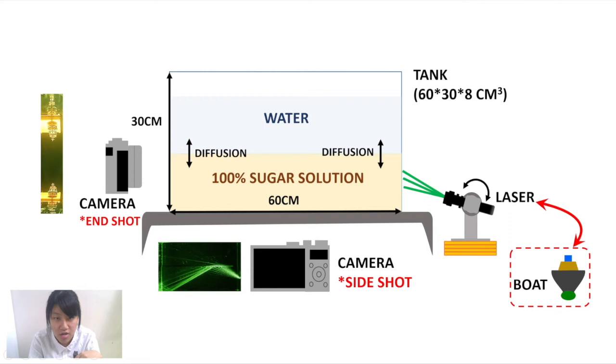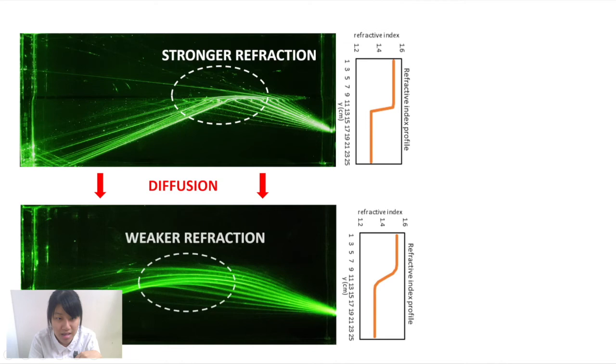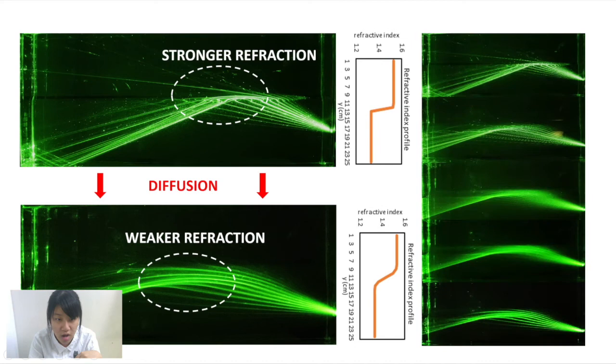During the experiment, the water and the saturated sugar solution gradually diffuse with each other. As the diffused area expands, the refractive index variation becomes less intense. We found that the refraction of light is thus weaker and the intersection of the light trajectories will move farther away from the objects.